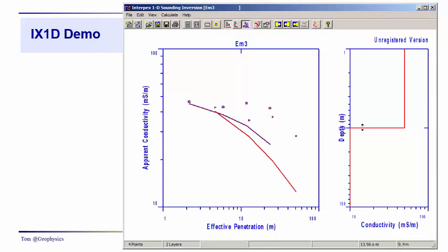Usually when IX1D comes up, you'll have a default model. In this case, it's a simple two-layer model, which obviously does not produce a response which matches the observations.